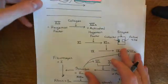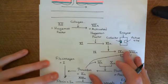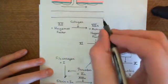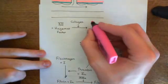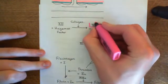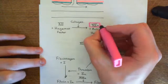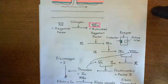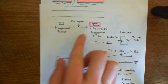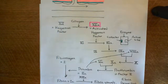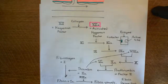Starting with the intrinsic coagulation pathway, antithrombin-III inhibits activated Hageman factor, factor 12A. If factor 12A is being activated within the bloodstream, antithrombin-III, which is also present in the bloodstream, is going to inactivate it.